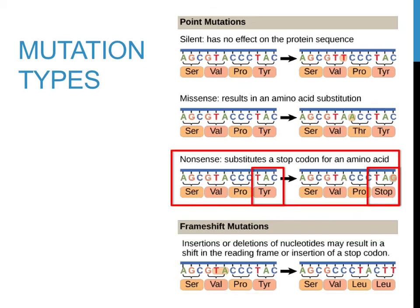Another type of substitution mutation is called a nonsense mutation. Instead of producing a different amino acid, when a nonsense mutation occurs a stop codon is coded for. This premature stop of a protein can be caused by just a single letter — from TAC to TAG, for example — and is much more likely to have a substantial impact on the protein being produced, especially if it occurs early in the coding for that particular protein.